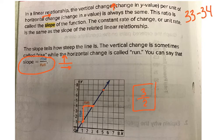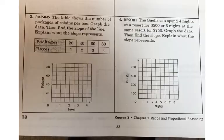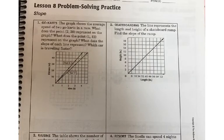Okay, let's apply this to our assignment today. So this is page 33. And we're going to do number 2. Number 2 says, the line represents the length and height of a skateboard ramp. Find the slope of the ramp. So we're going to just pick any two points on a corner. I'm just going to pick this point here.